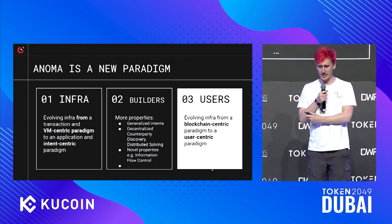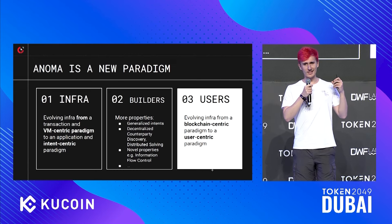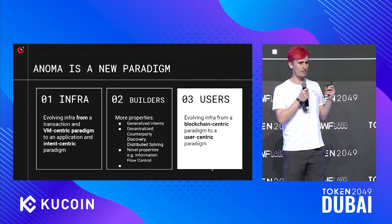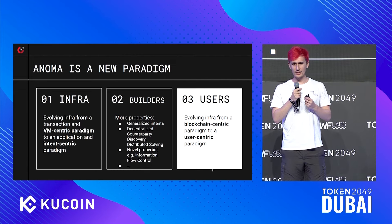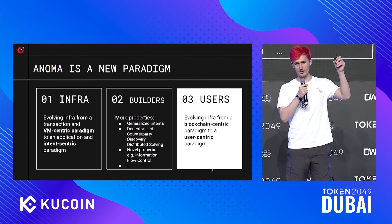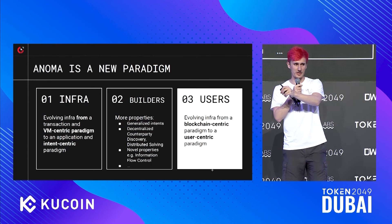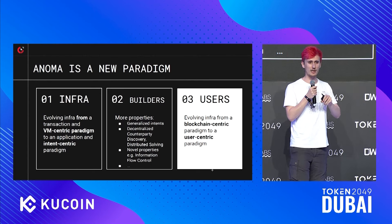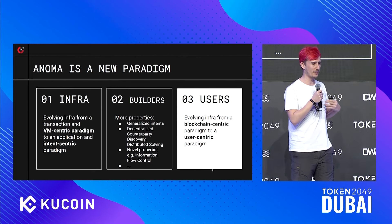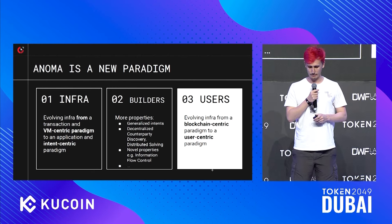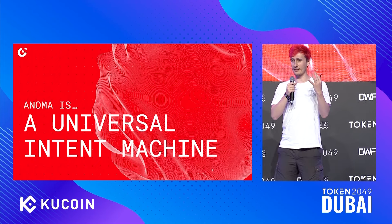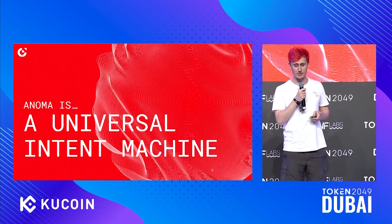And lastly, intent-centric designs allow users to more easily reason about the system. Rather than signing a specific execution trace where this opcode modifies some state and that opcode modifies some other state, users just sign over specific state changes — which is much easier to understand from an end user perspective. So Anoma is a universal intent machine. If anyone ever asks you what Anoma is, it's a universal intent machine.